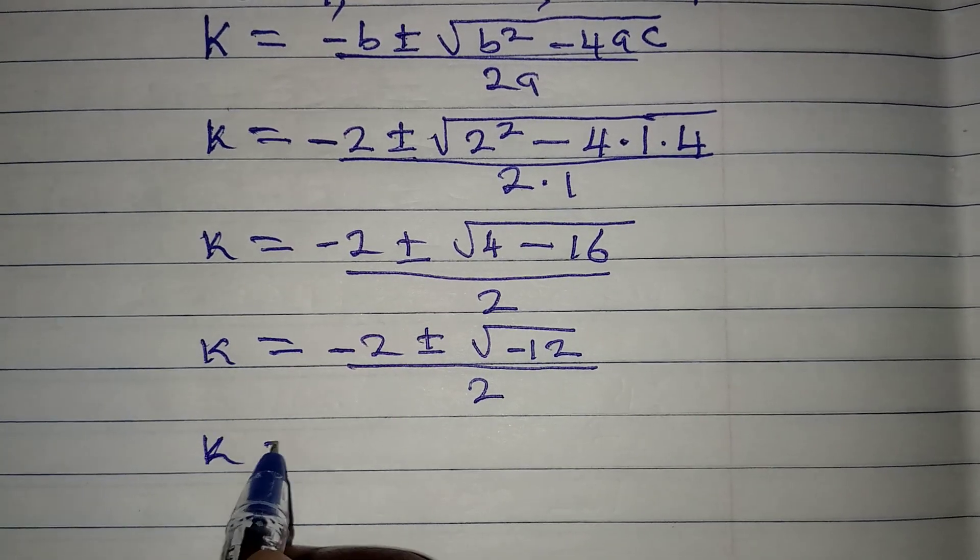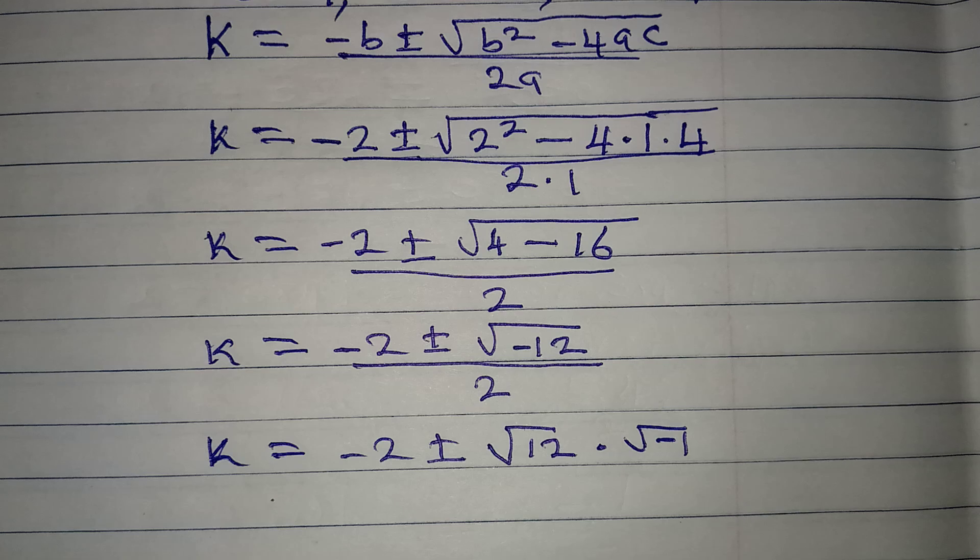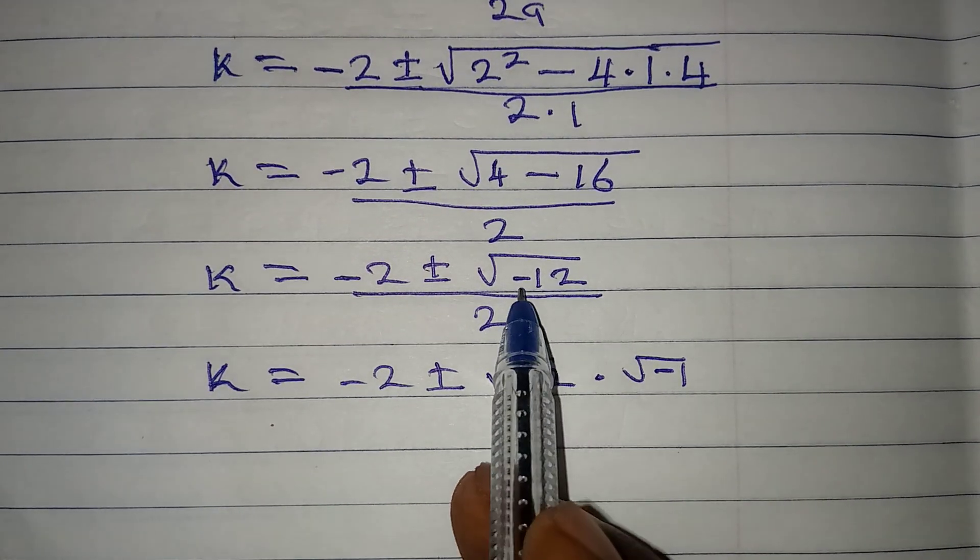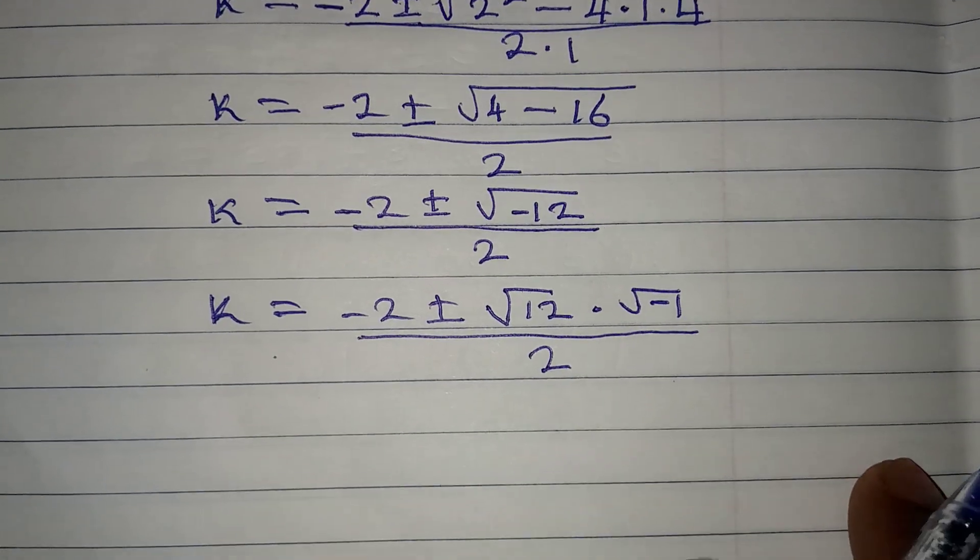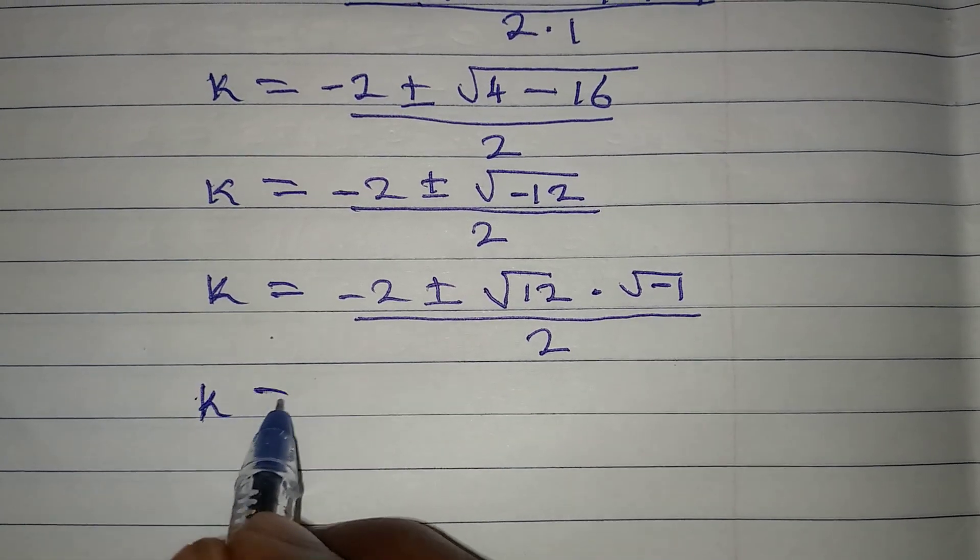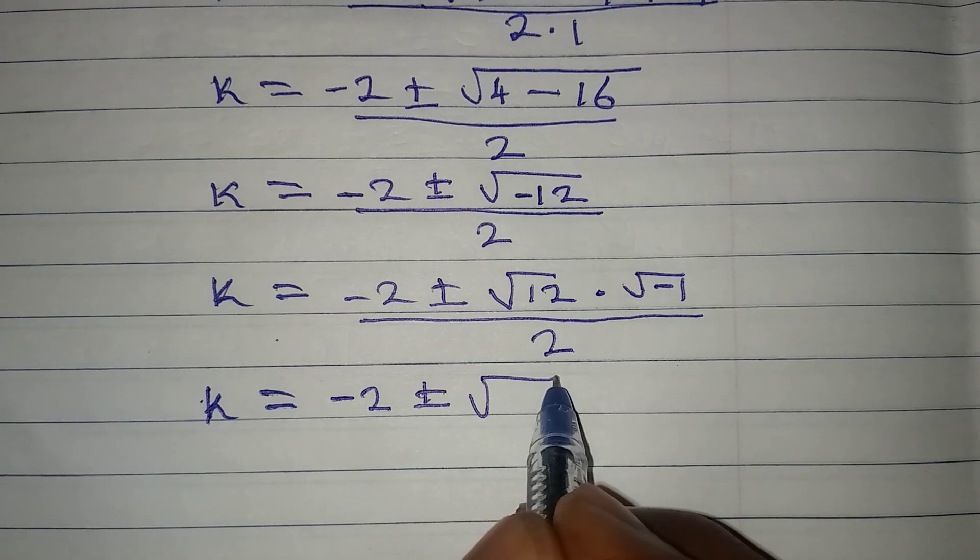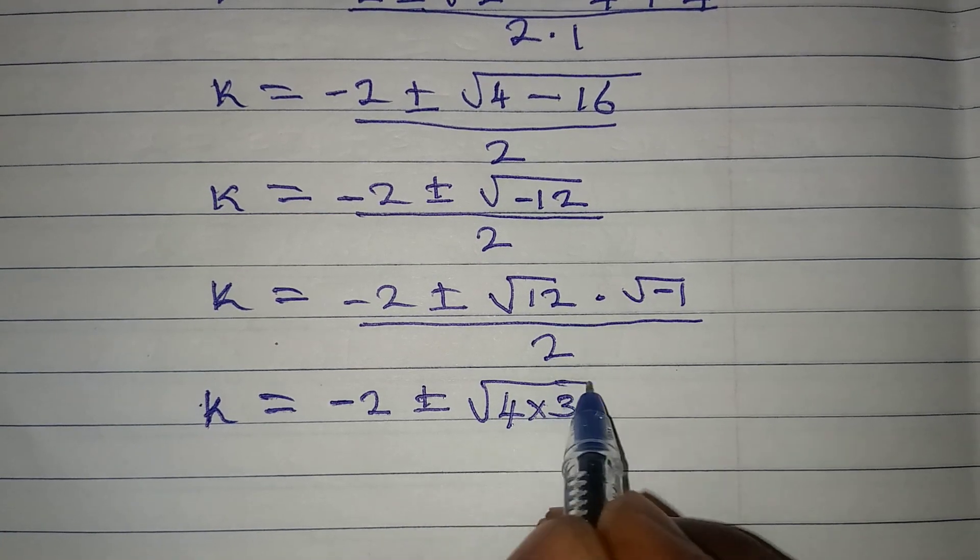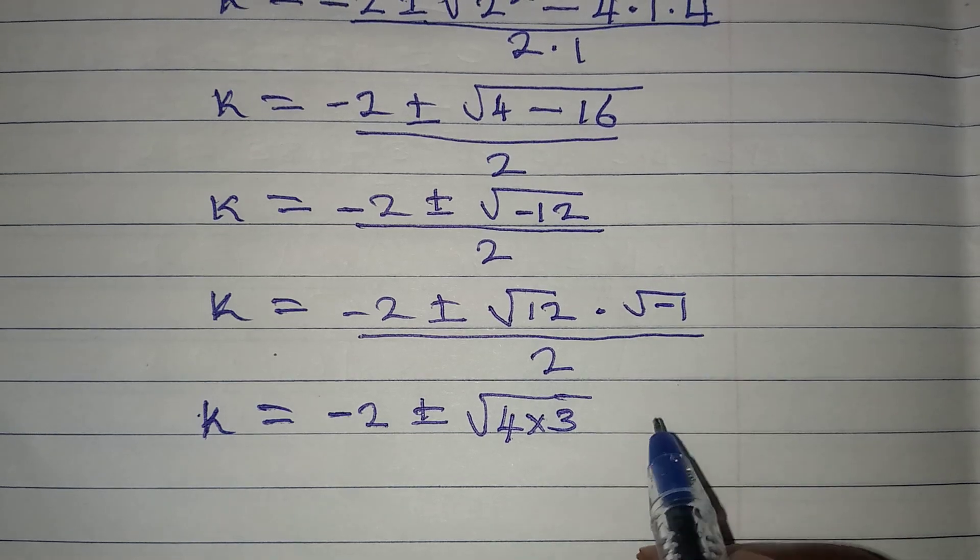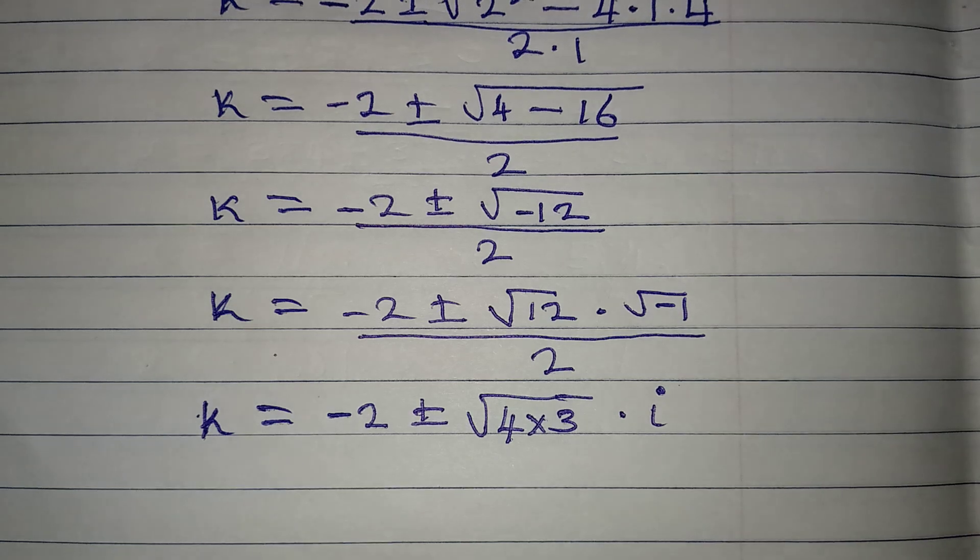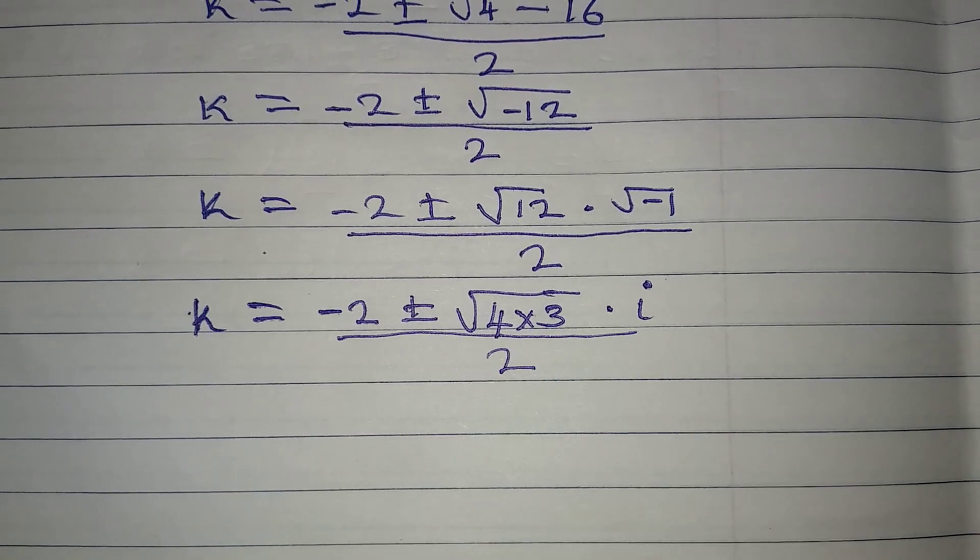To continue, k will be equal to -2 ± √12 multiplied by √-1. I have succeeded in bringing out the negative from there. So that we can get the square root of 12. This will be over 2. Now, let's break it down further. k will be equal to -2 ± √4, square root of 12 here can be broken down into 4 times 3. Because square root of 4 times 3 is 12, so it's the same thing. And then square root of -1 will give us i, an imaginary number.